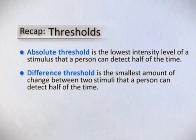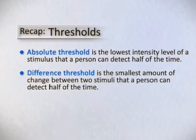Recap. Thresholds. Absolute threshold is the lowest intensity level of a stimulus that a person can detect half of the time. Difference threshold is the smallest amount of change between two stimuli that a person can detect half of the time.